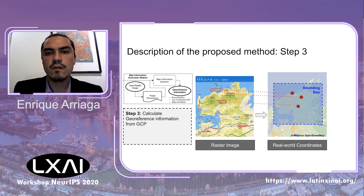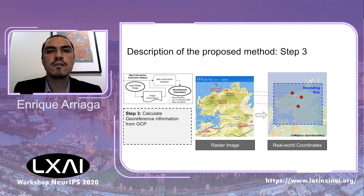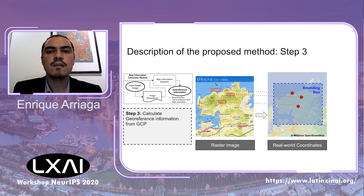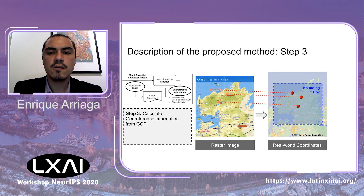We also mentioned at the beginning that with a series of GCPs, a bounding box can be calculated, and that is exactly the goal of the third and final step — and also the result of the system. Experimentally, we have found that larger cliques with lower variance increase the chance of having found the correct georeference information.